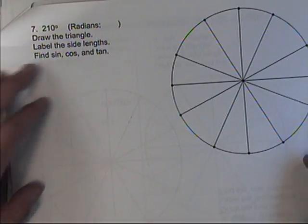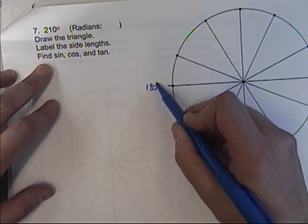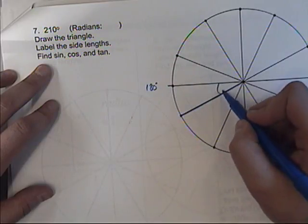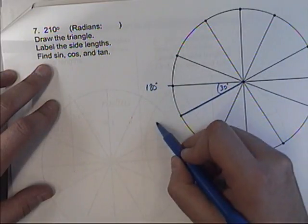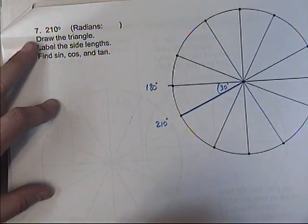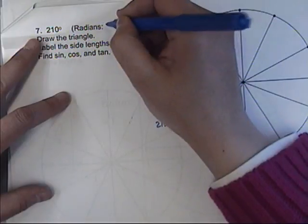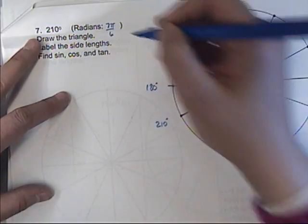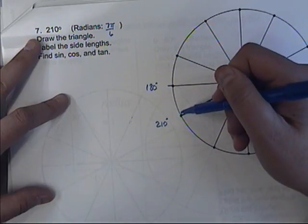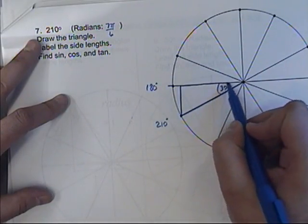210 degrees is right here. Remember, this is 180. So 210 would be here — it's just 30 degrees past the 180 mark. What is that in radians? This is 6 pi over 6, so this would be 7 pi over 6. To draw the triangle, we go down the spoke and always back towards the x-axis and back to the origin.